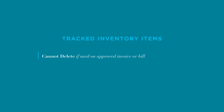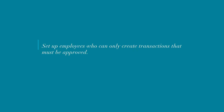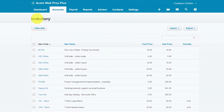You can't delete a tracked inventory item if it's been used on an approved invoice or an approved bill. One of the features that makes Xero stand out is the ability to assign a role with specific permissions to a user. Depending on user permissions, you can set up employees who can only create transactions while you or someone else must approve them. You will learn how user permissions work in the how to invite users lesson — click this link to access it.